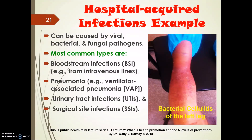Hospital-acquired infections are an example of quaternary prevention concerns. They can be caused by a variety of infectious agents, including viral, bacterial, and fungal pathogens. The most common types encountered are bloodstream infections from intravenous lines, pneumonia associated with ventilator use, urinary tract infections, and surgical site infections. In this photo, you can see a client who has unfortunately developed bacterial cellulitis of the left leg. Both hospital-acquired and community-acquired infections are a growing public health concern globally due to microbial antibiotic resistance.